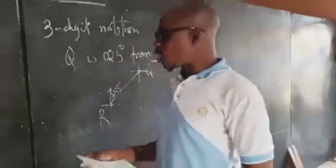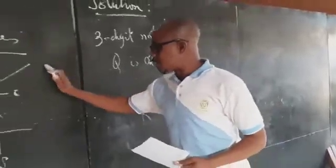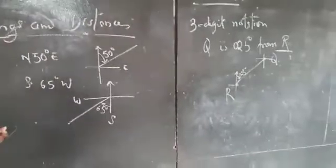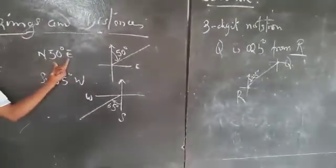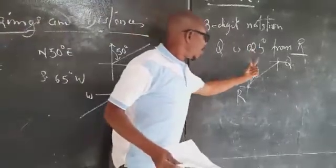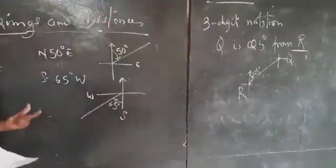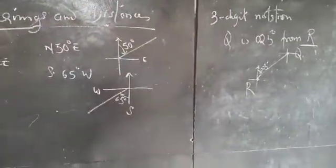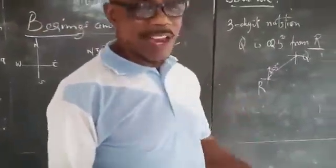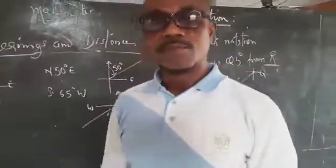Now once we know how to locate a certain place, whether given in cardinal form or three-digit form, we'll be able to work with bearings and distances. Thank you.